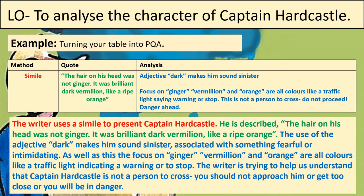For example, you could say: 'Furthermore, the writer uses another simile to present Captain Hardcastle as an antagonist. He is described as having legs that are thin and hard as a ram's.' Think about the fact that a ram is quite strong and powerful — you wouldn't want to cross it. He's not being compared to a cuddly dog or another friendly animal — it's a ram, with horns, that could hurt you. Use the table you planned earlier, considering both structural and language devices used by the writer to make Captain Hardcastle appear as the antagonist. Find those quotations from earlier and write your three PQAs. When you've done that, you've finished this lesson.